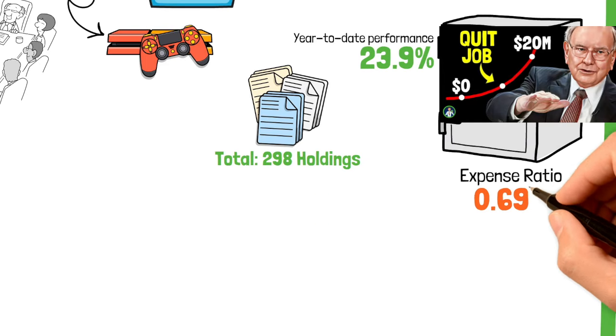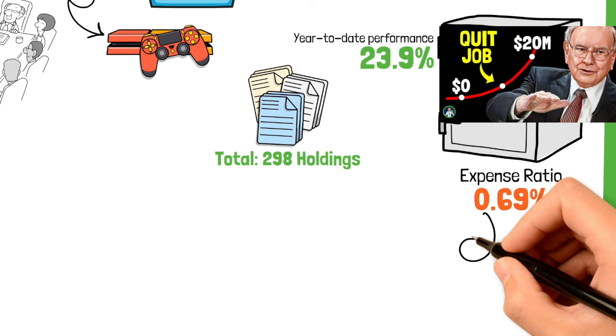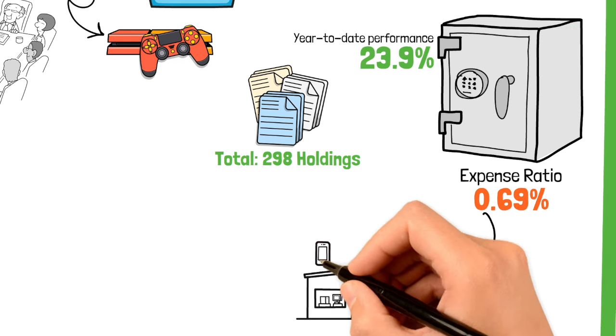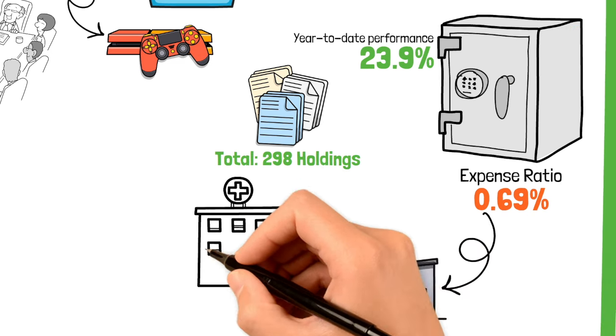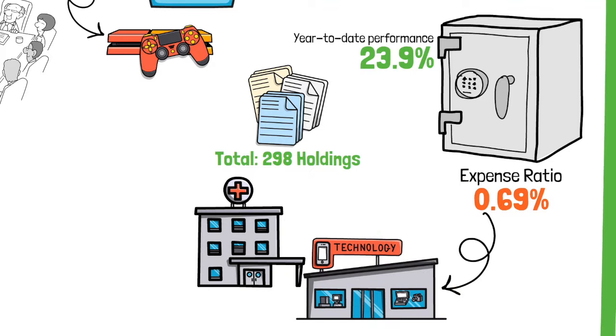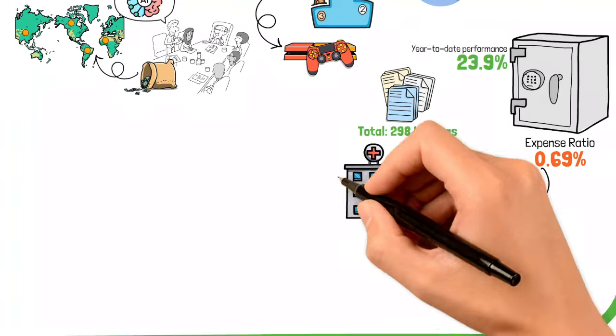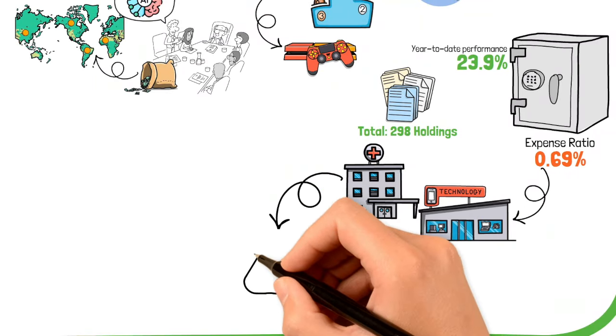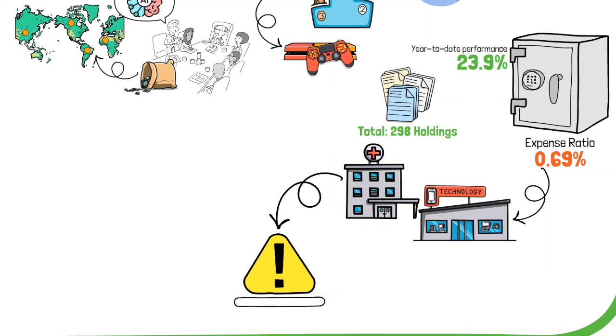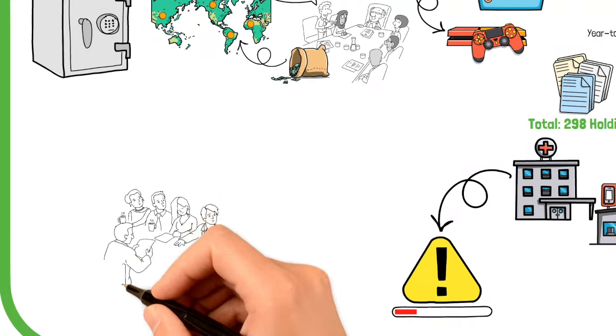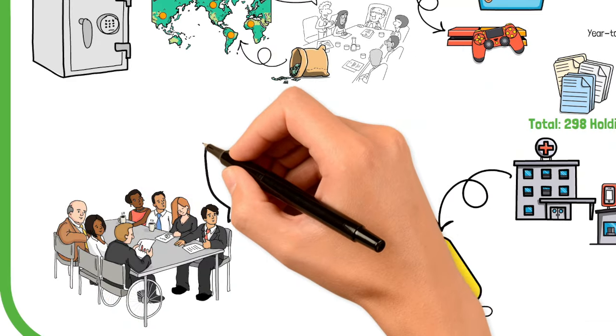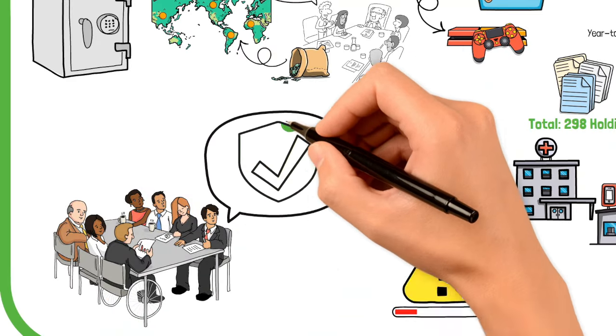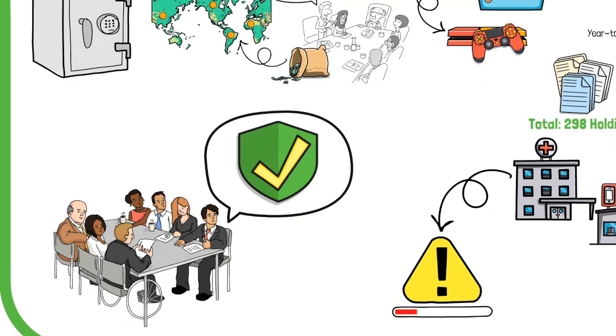The expense ratio for BOTZ is 0.69%, which is on the higher end. However, this fee is justified by the extensive diversification and global reach the ETF offers. BOTZ's broad and diverse portfolio helps mitigate risk, making it a safer bet for those concerned about investing in a concentrated sector. The international mix of companies ensures that the ETF can capitalize on AI advancements globally, providing stability and growth potential.